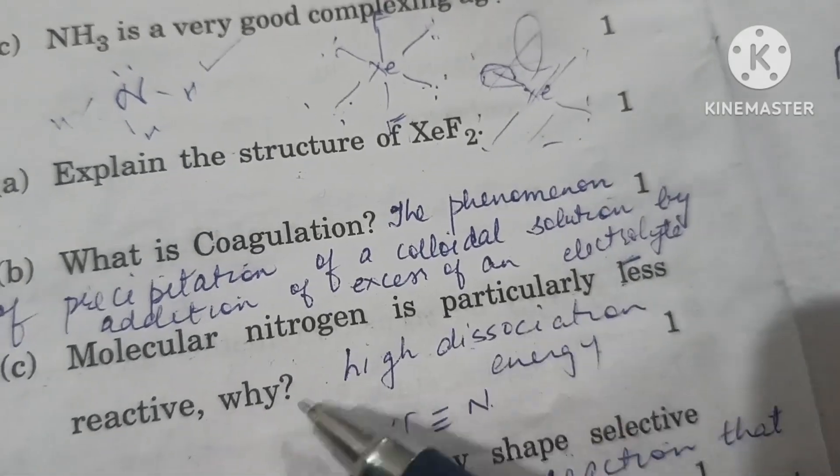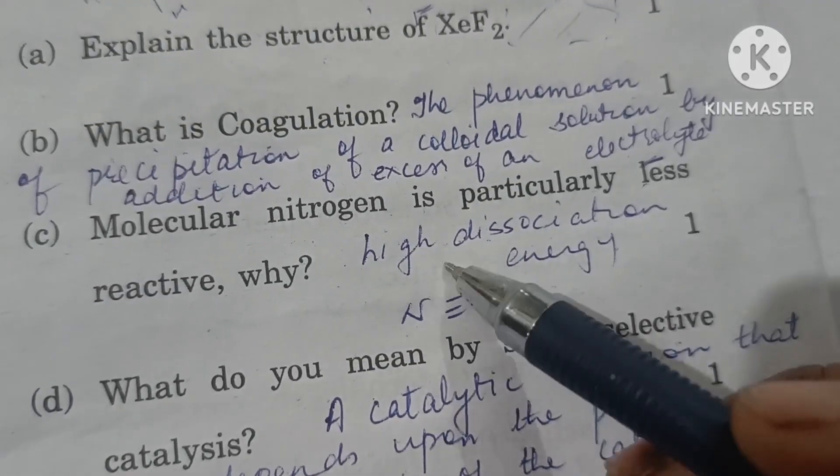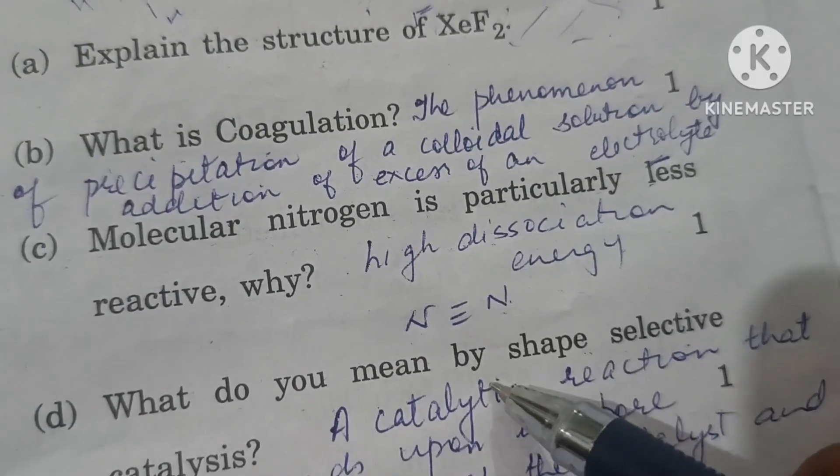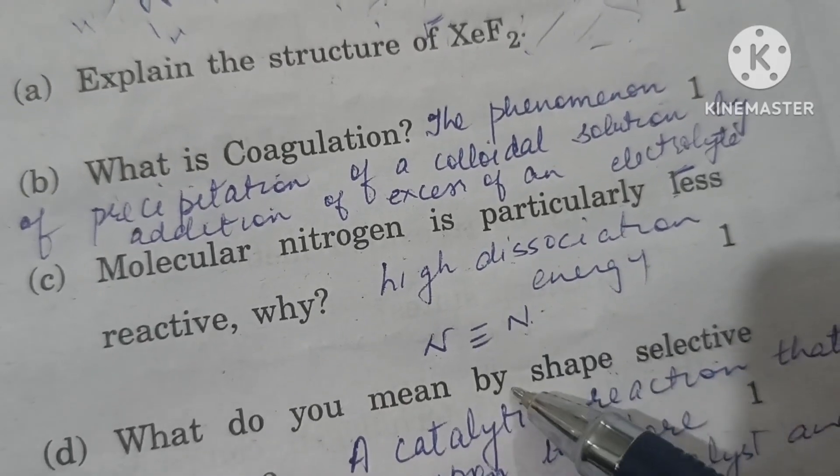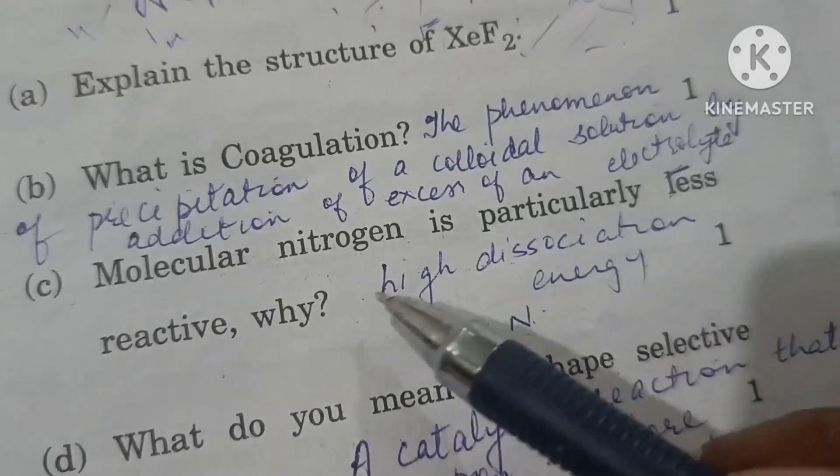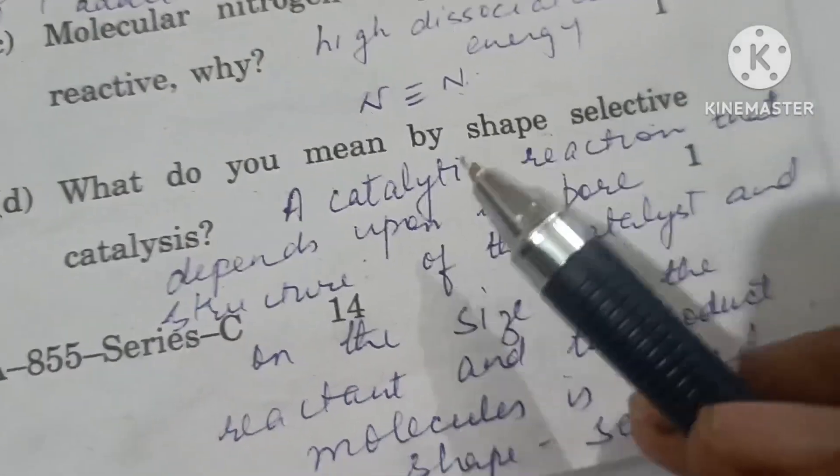Molecular nitrogen is particularly less reactive because the N2 molecule has very high dissociation enthalpy. The atom is small and there's a triple bond between them which is difficult to break, so it's less reactive.